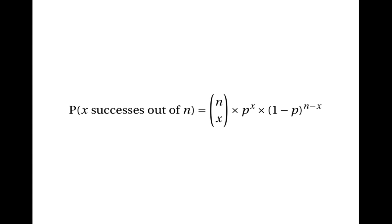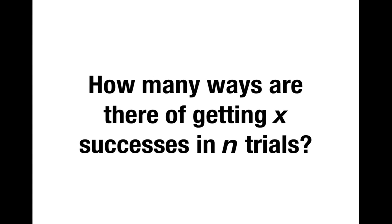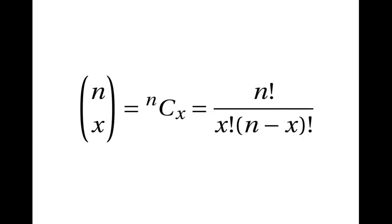This is the key formula for the binomial distribution. In order to use it, we need a better way of working out how many ways there are of getting x successes in n trials — counting them all isn't practical. Fortunately, there's a formula: n choose x equals n factorial over x factorial times n minus x factorial.